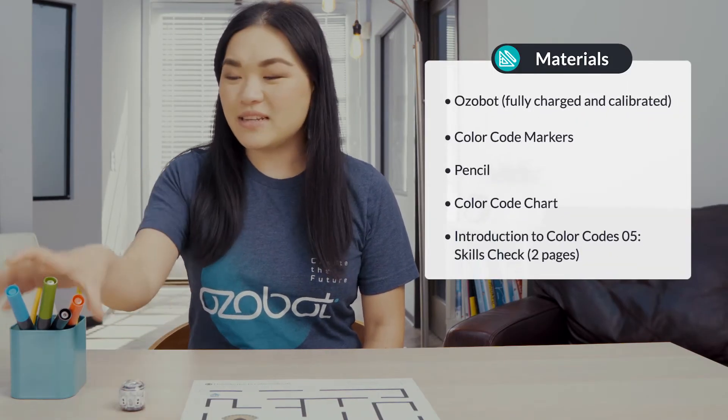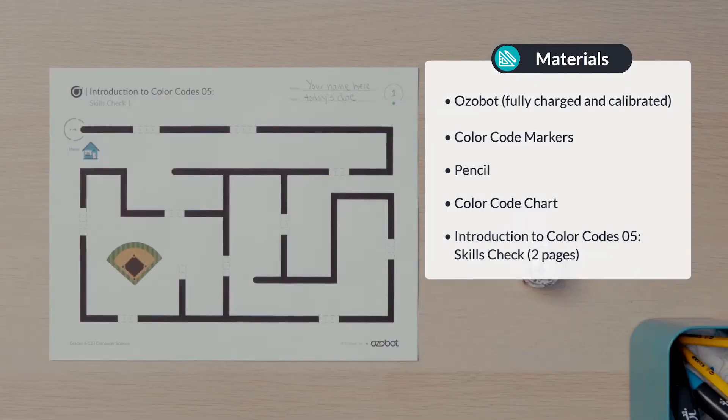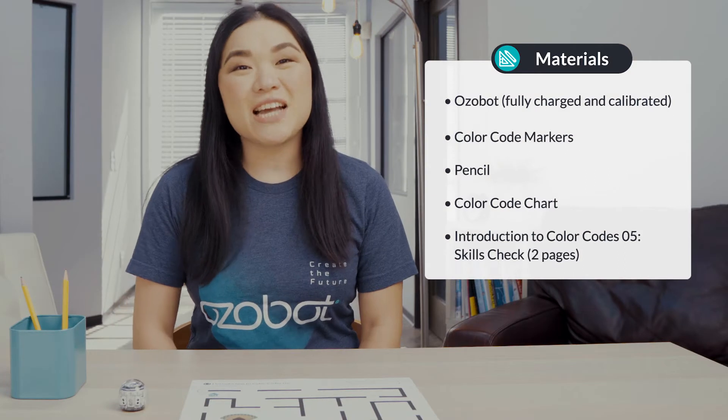For today's lesson you will need an Ozobot, fully charged and calibrated, color code markers, a pencil, your skills check activities sheet, and a color codes chart.